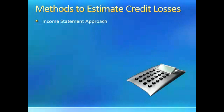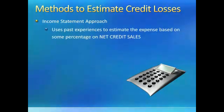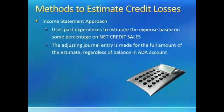Alternatively, we can use the Income Statement Approach. The Income Statement Approach uses our past experience to estimate the expense based on net credit sales. If we use this approach, this is the amount of the expense and, in turn, the amount of the journal entry, regardless of the balance in the Allowance for Doubtful Accounts.